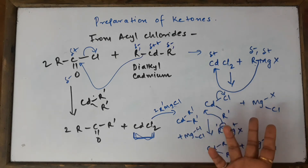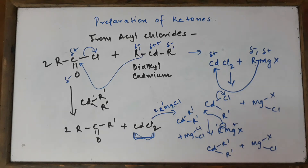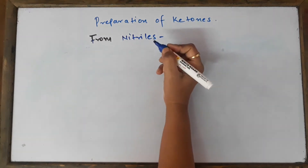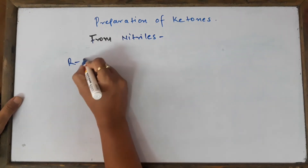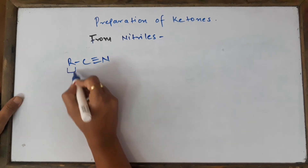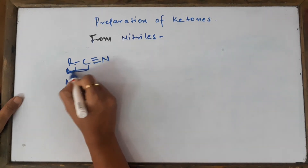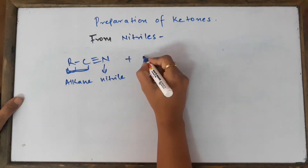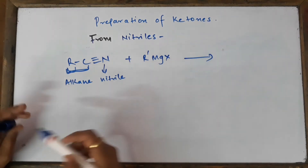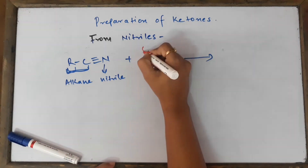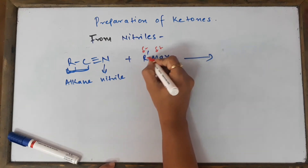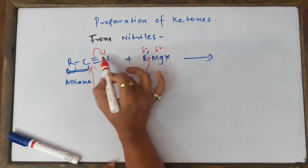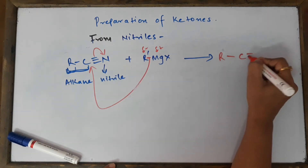Let's go to the next method: from nitriles. This is a very interesting and useful method for exams. We take alkane nitrile — the common name is alkyl cyanide — and react it with Grignard reagent R'MgX. The nucleophilic carbon (negative) in the Grignard attacks the positive carbon atom of the nitrile, which is positive due to the electronegative nitrogen atom attached to it.